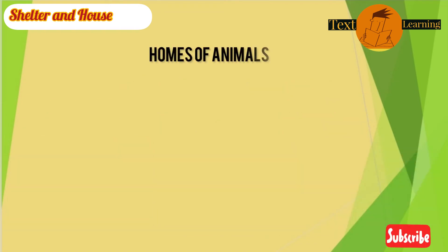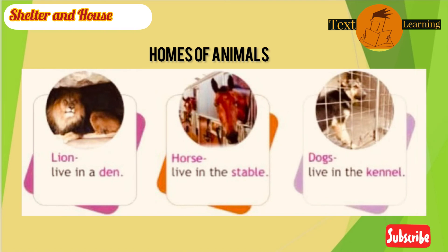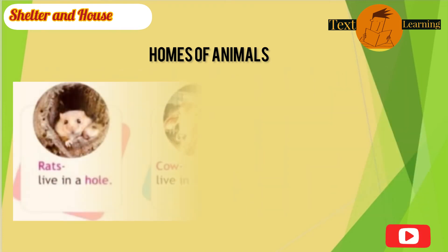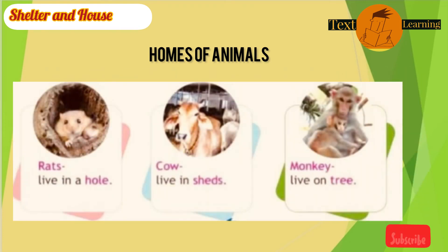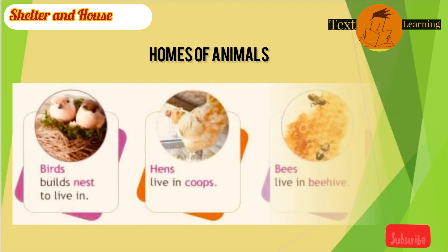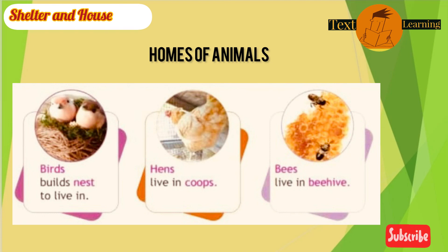Homes of animals. Lions live in a den. Horses live in a stable. Dogs live in a kennel. Rats live in a hole. Cows live in a shed. Monkeys live on trees. Birds build nests to live in. Hens live in coops. Bees live in a beehive.